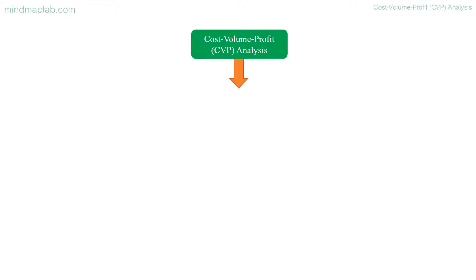Hello there. Today let's learn how to mind map Cost Volume Profit (CVP) analysis. CVP analysis is used to show how costs and profit change with changes in volume of activity.